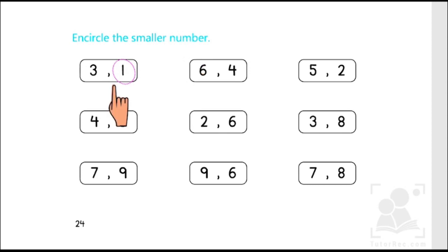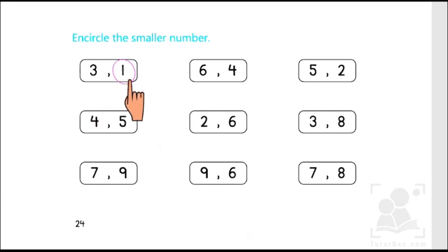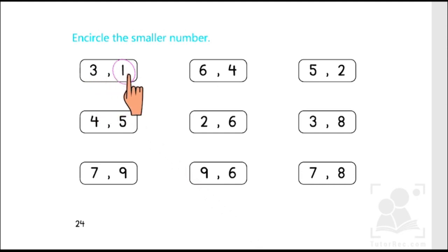As we can see, the first box has been done for us. The numbers here are three and one. We can identify that the number that comes earlier is the smaller number. When we start counting, one comes before three, so one is the smaller number.